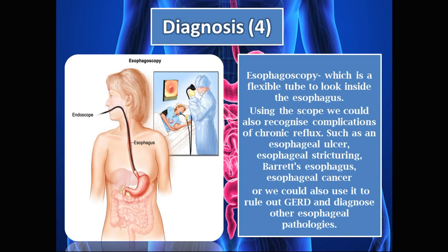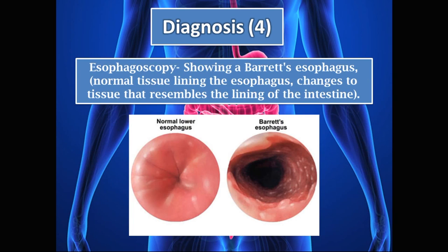We can also diagnose GERD using an esophagoscopy, which is a flexible tube with a camera used to look inside the esophagus. Using the scope we can recognize complications of chronic reflux such as ulcers, strictures, Barrett's esophagus, and cancer, or we can use it to rule out GERD and diagnose other esophageal pathologies.